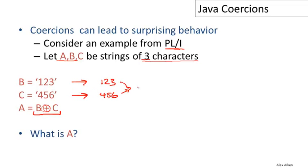And then we'll add them and we'll get out the number 579. So the result of this expression is 579, but A is also a string of three characters. So this has to be cast back to a string.